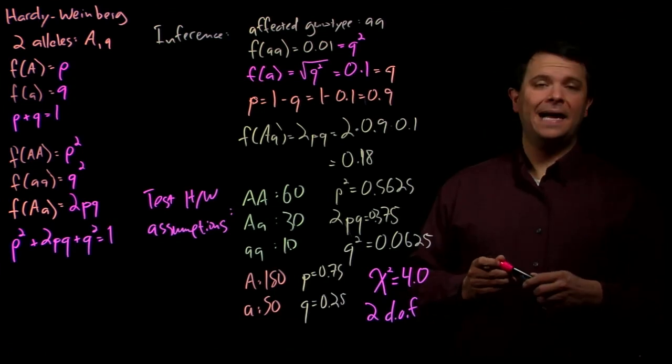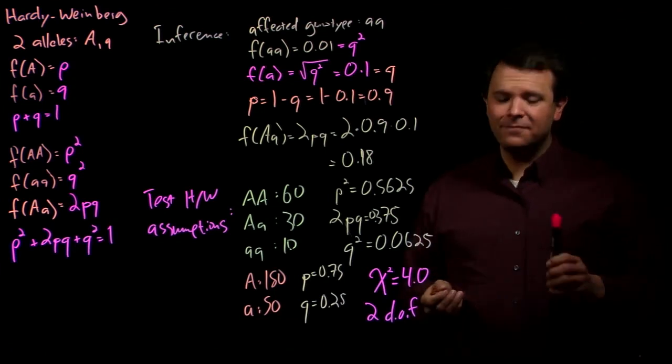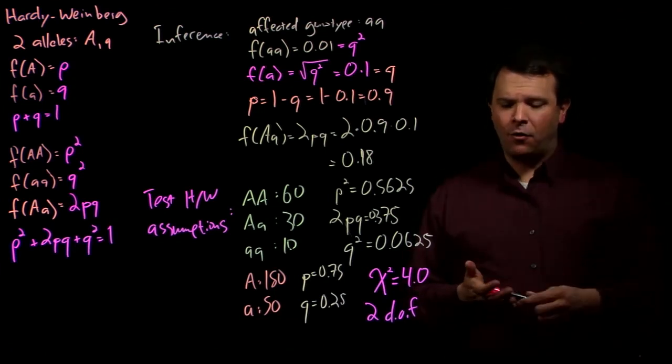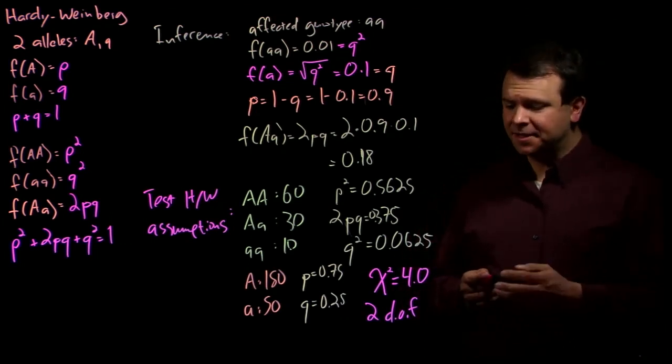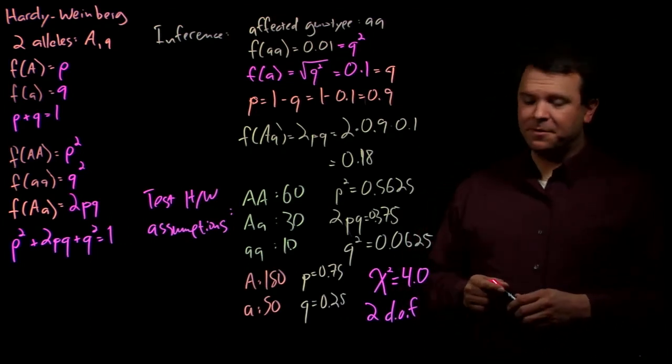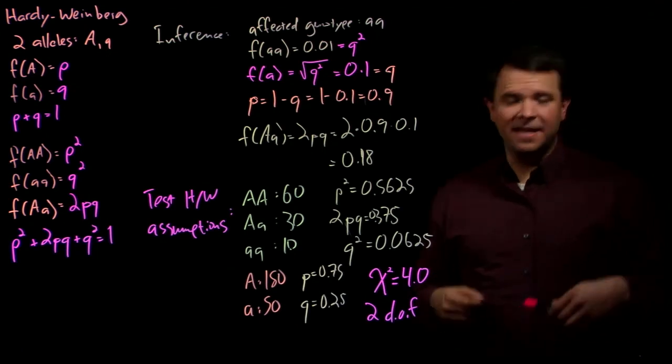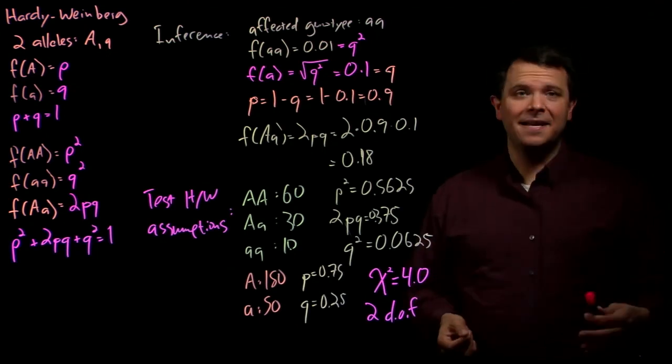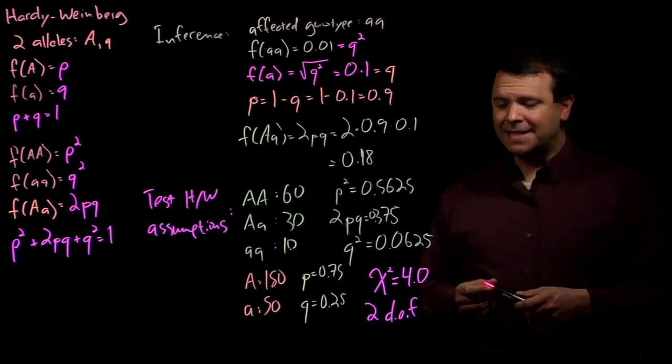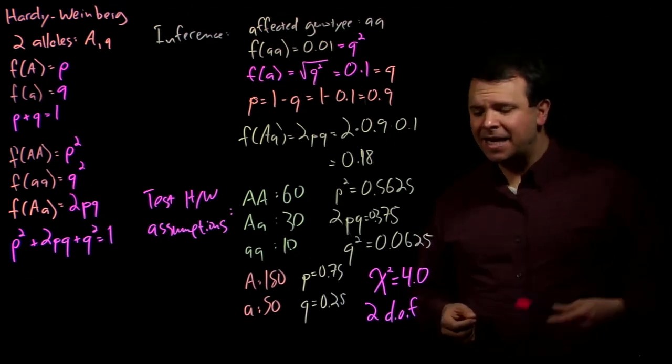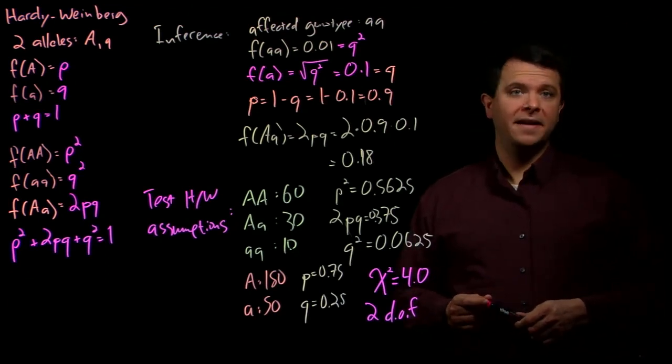Finally, I will hasten to add that non-random mating is not the only way for an allele distribution in a population to change. Populations change by mutation, they change by random drift, and they change by natural selection. And so, the processes that change allele frequencies are our next topics.